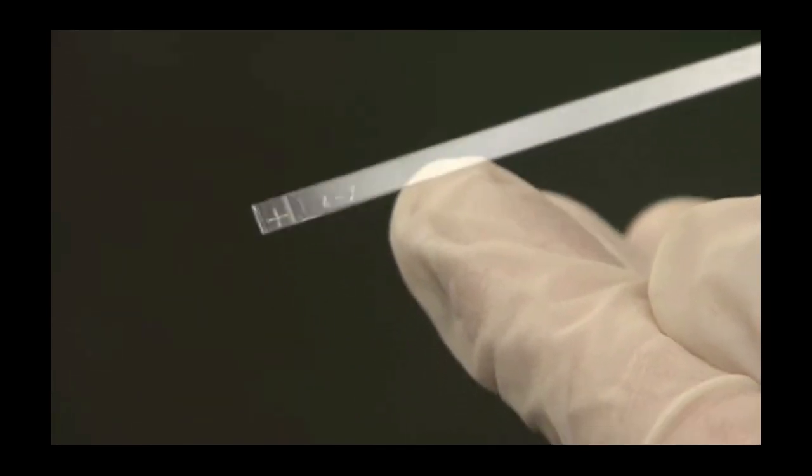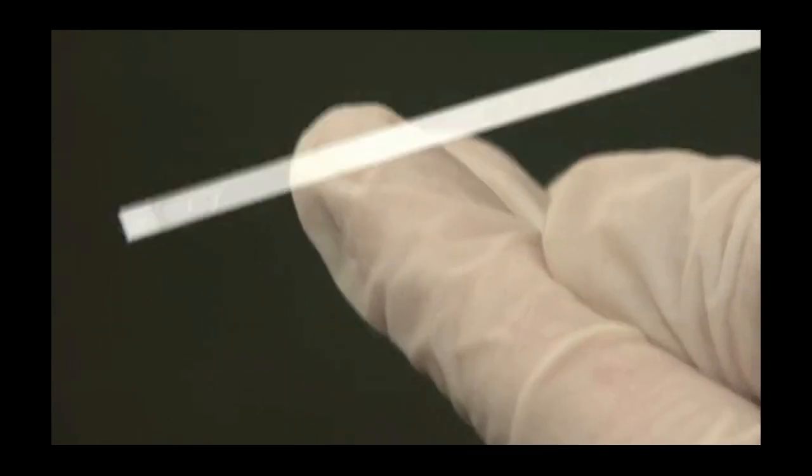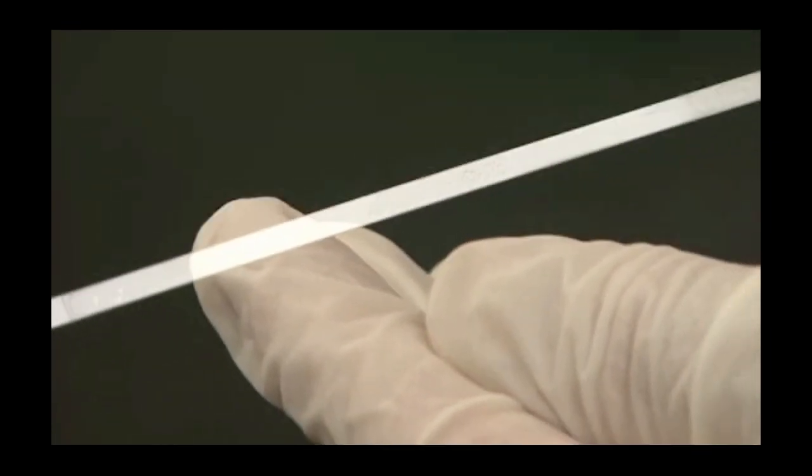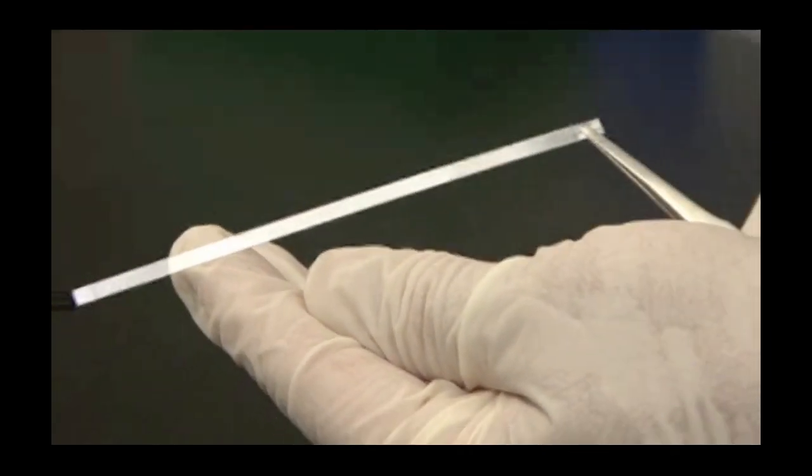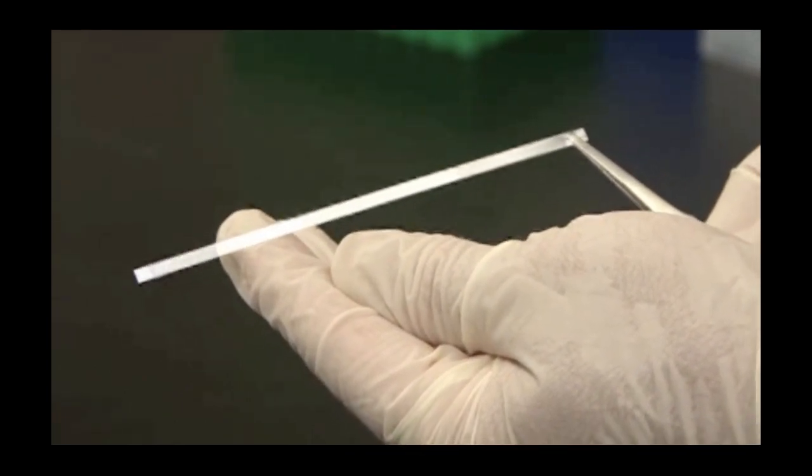Now the gel will be loaded onto the sample bead gel side down. If you are running multiple samples, I recommend labeling your strip before this step. Make sure to label the side of the gel and not the protective backing.